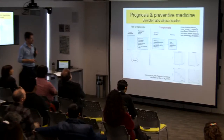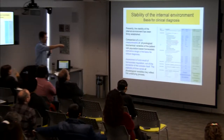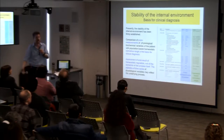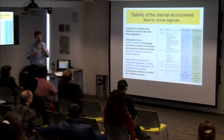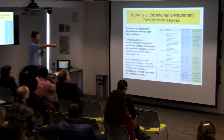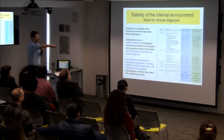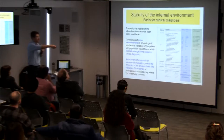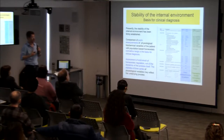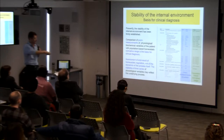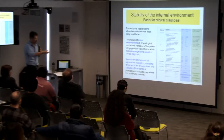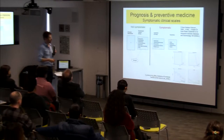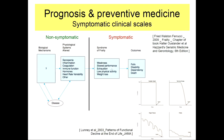If your parameters are outside this range, you are already ill. I would be more interested in the dynamics of the regulatory process itself. These parameters are the end result of regulatory processes — they're static measures. We would need insights into the dynamics of these regulatory processes in order to do prognosis and preventive medicine.